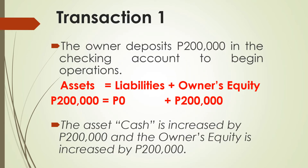Let's look at our first transaction example. The owner deposits $200,000 in the checking account to begin operations. The asset cash is increased by $200,000, and it also has an impact on owner's equity — specifically, capital increases by $200,000. So Assets = Liabilities + Owner's Equity is balanced.